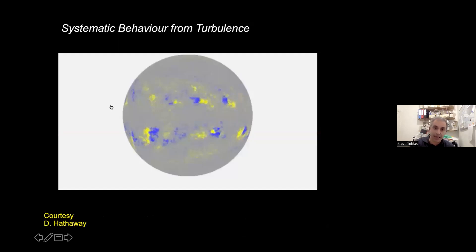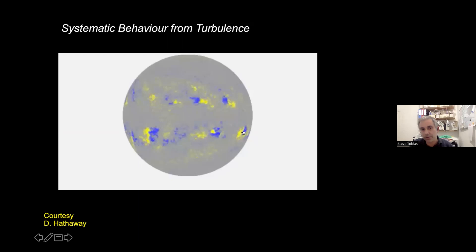This is a magnetogram of the solar surface. In the northern hemisphere, all these bipolar regions have yellow leading blue, whereas in the southern hemisphere it's blue leading yellow. The toroidal magnetic field has opposite polarity in the northern hemisphere compared to the southern hemisphere, and this is a signature of a dipolar magnetic field.